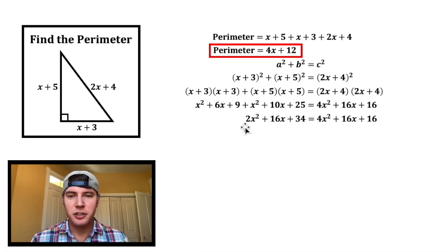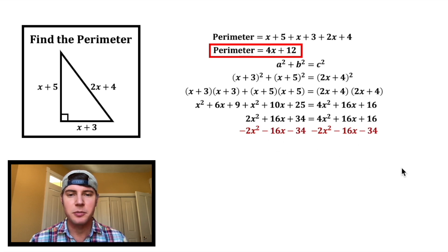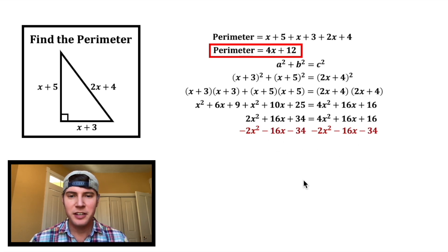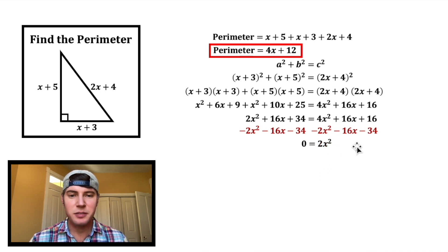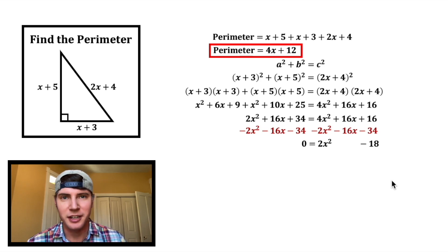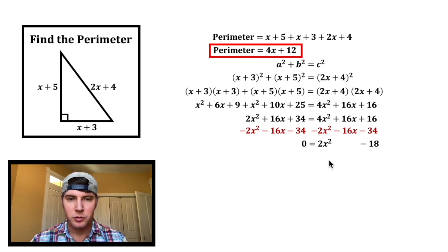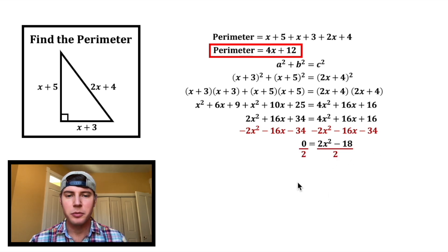I want to set this all equal to 0. So I'm going to subtract 2x squared from both sides, subtract 16x from both sides, and subtract 34 from both sides. The left-hand side is now 0. And 4x squared minus 2x squared is 2x squared, 16x minus 16x is nothing, and 16 minus 34 is negative 18. Scoot this over — divide both sides by 2. We get 0 equals x squared minus 9.